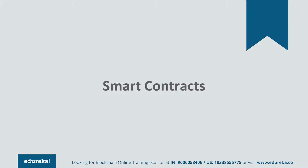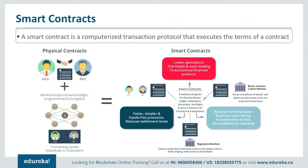Let's talk about what exactly smart contracts are. A smart contract is basically a computerized transaction protocol which executes the terms of a protocol. In simple terms, it's an application where you write standard contract rules and they get executed automatically without any changes, because anything on the blockchain is completely immutable. This immutability is the core foundation of blockchain, making it impossible to manipulate a contract.